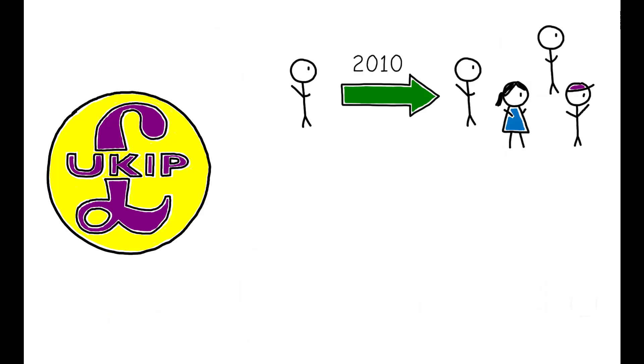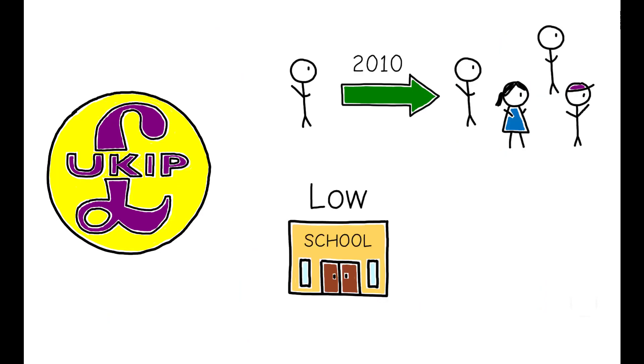So, why did support for UKIP shift so suddenly after 2010, and why was that shift concentrated in these particular areas of the country? The timing and distribution of these changes suggest that the government's austerity measures played an important role.